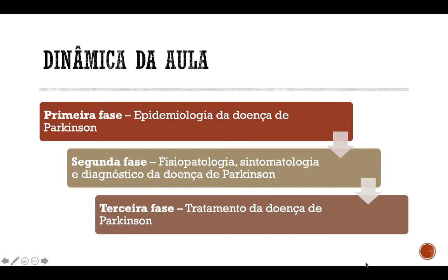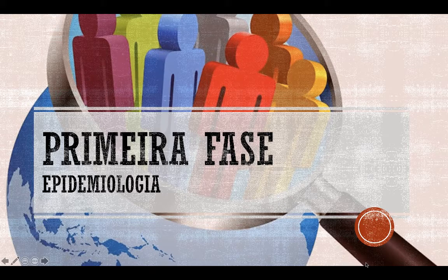A dinâmica da videoaula de hoje terá três fases. Na primeira fase, falaremos sobre a epidemiologia da doença de Parkinson. Na segunda fase, sobre a fisiopatologia, a sintomatologia e o diagnóstico da doença de Parkinson. E na terceira fase, falaremos sobre o tratamento da doença de Parkinson. Então, na primeira fase, falaremos sobre a epidemiologia.